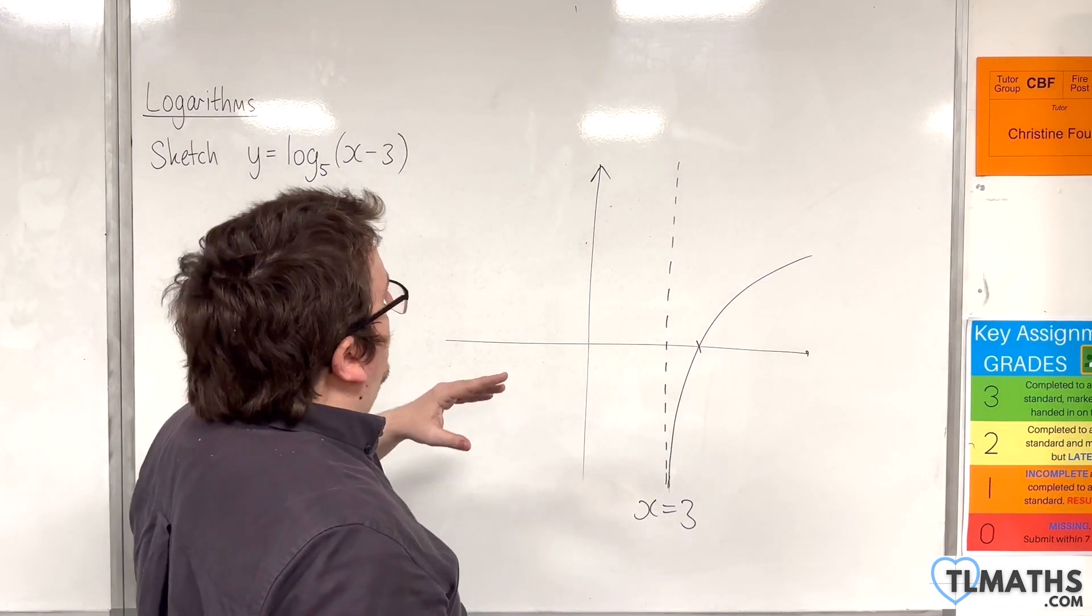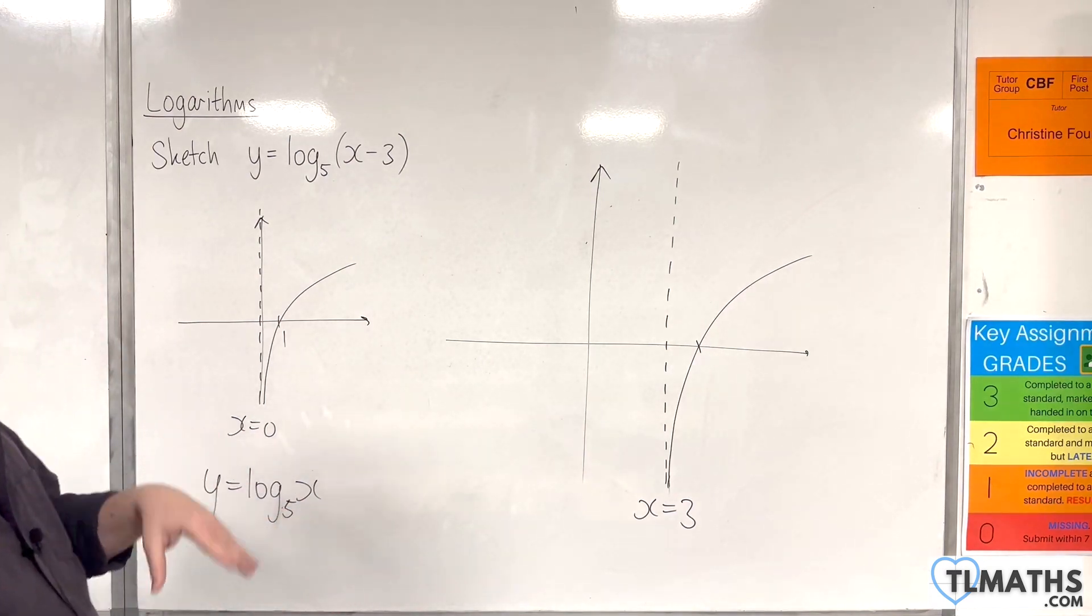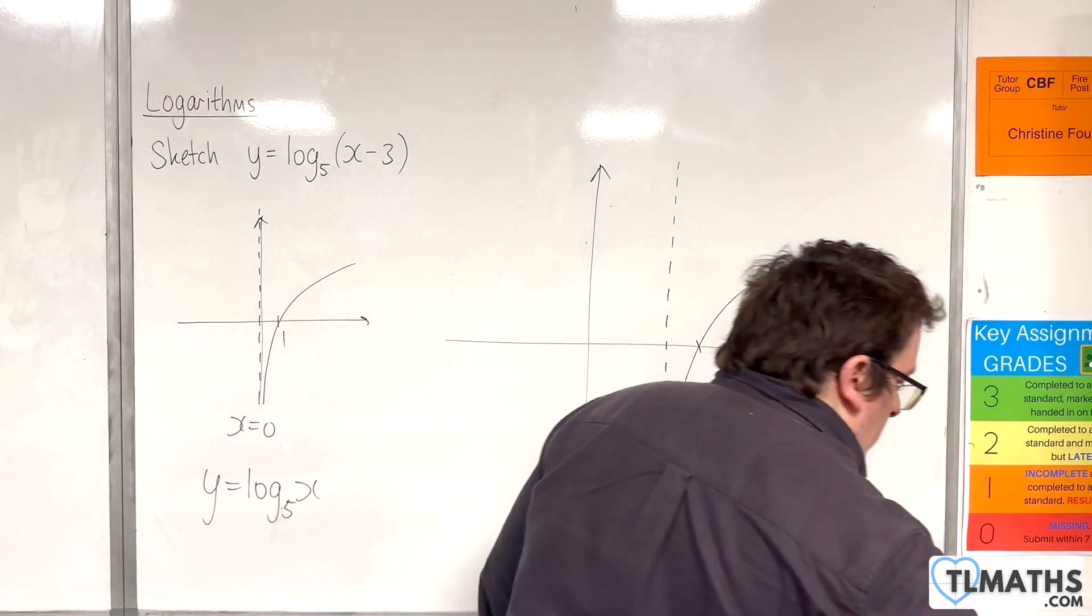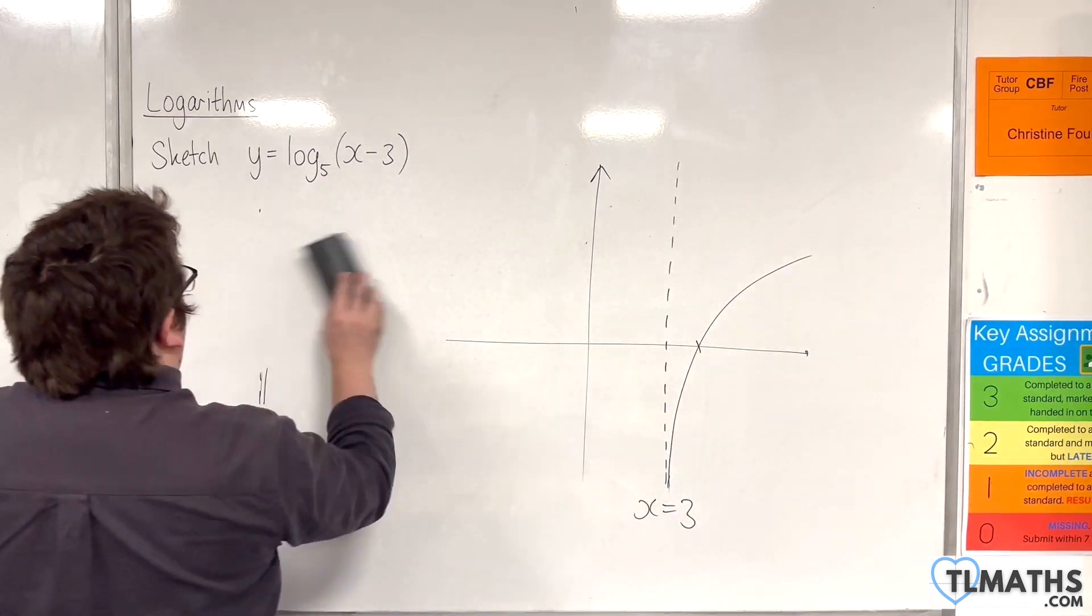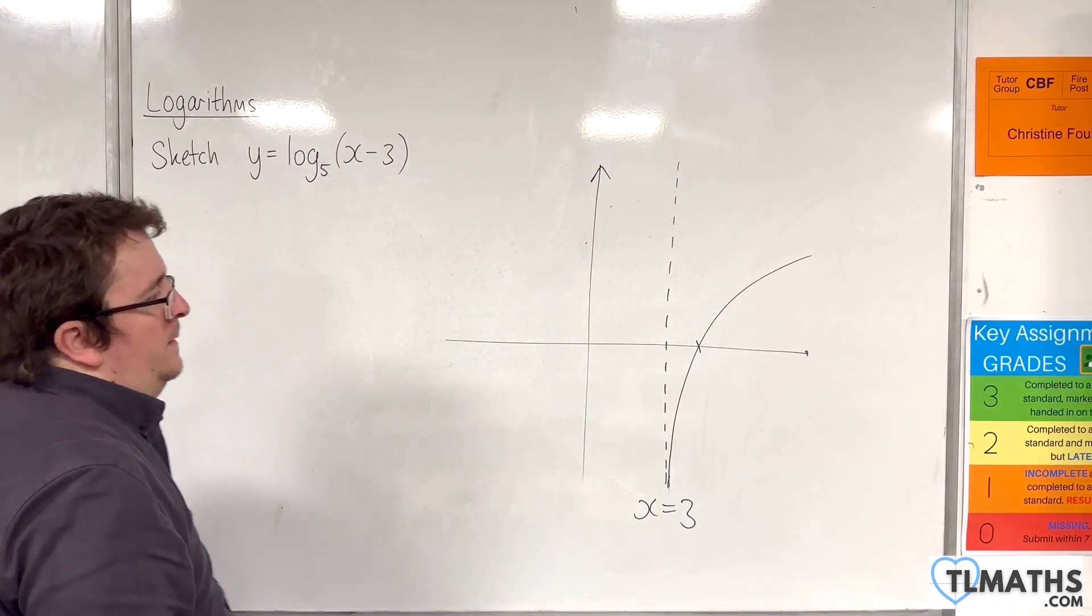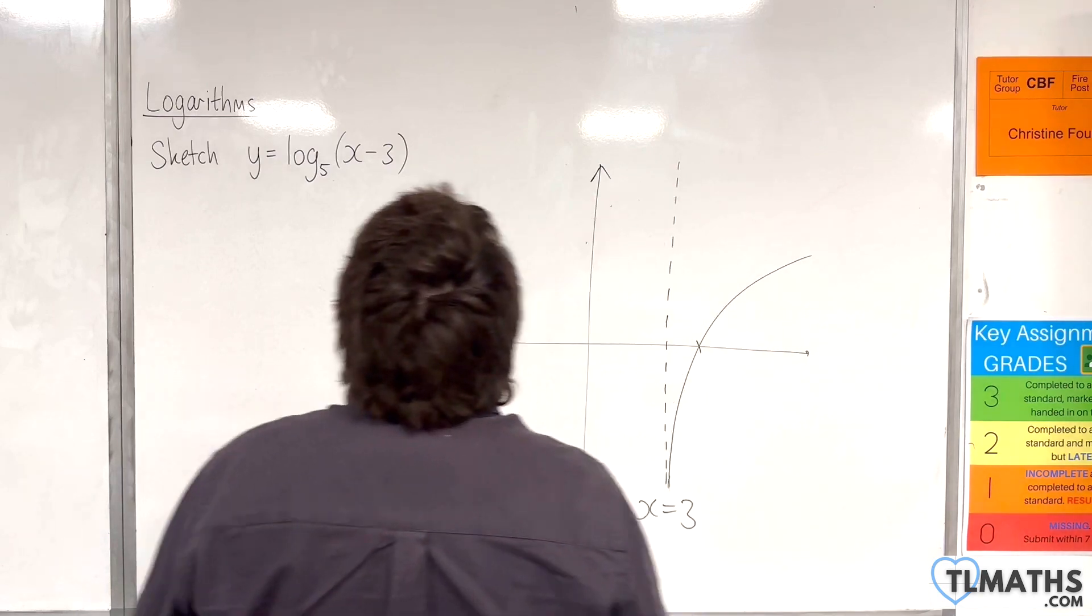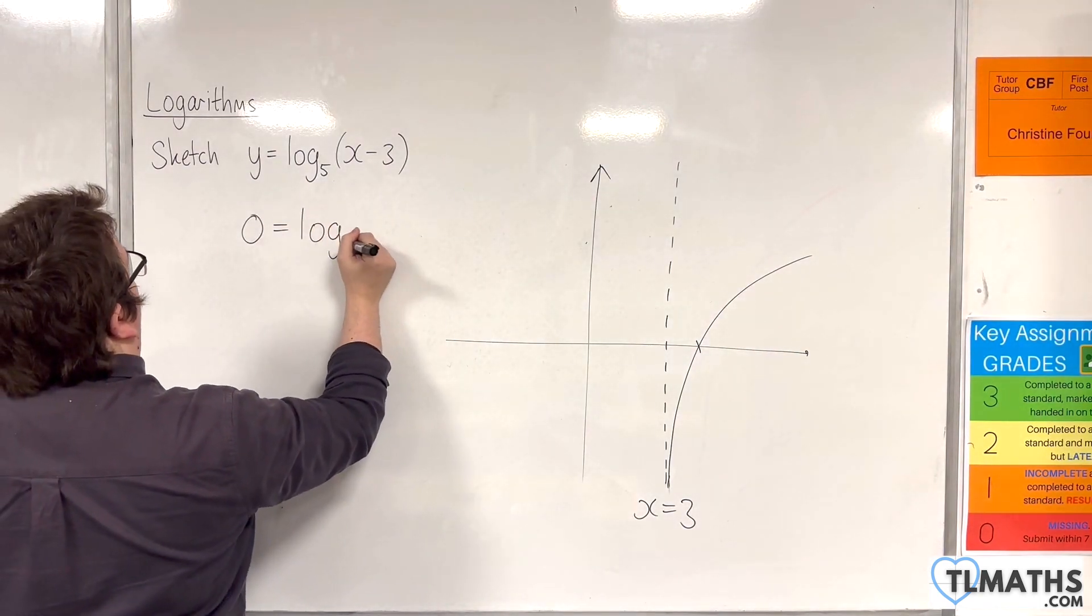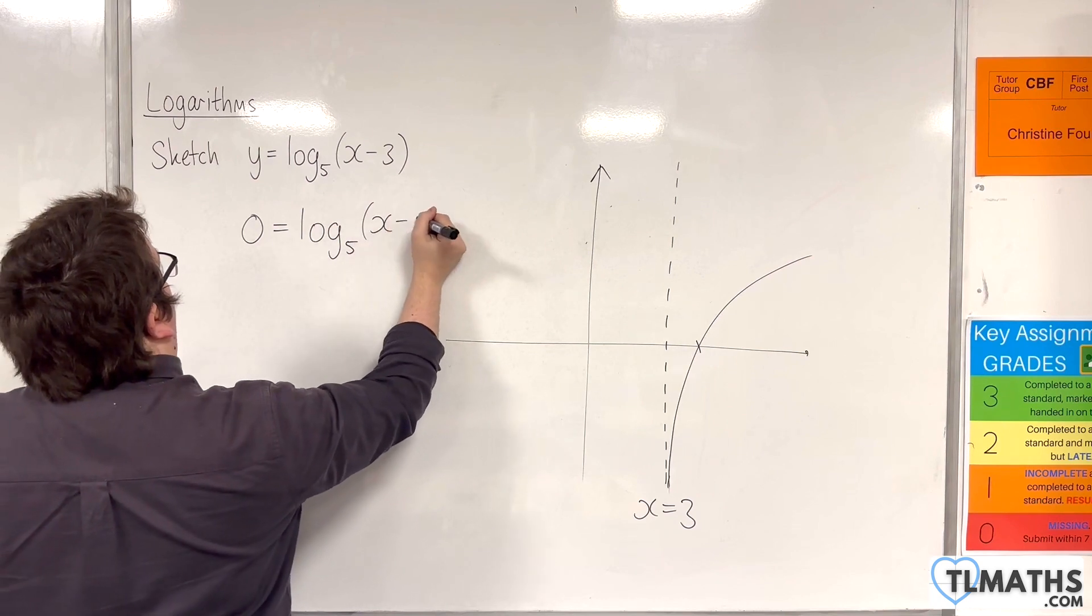Algebraically, what we're doing is we're putting the y value as being equal to 0. So if I put y as 0, we're going to get 0 equals log base 5 of x take away 3.